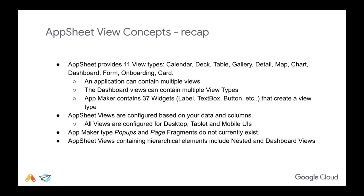With a no-code platform like AppSheet, your data is what drives your design — how you structure it determines the overall layout and design of your user interface, versus the low-code AppMaker approach where you have a more granular approach. You have 11 core view types in AppSheet, whereas AppMaker gives you about 37 different low-level widgets that you're completely in charge of. It is a mobile-first environment, but you can build for desktop and tablets as well, which we'll get into with some of the demos.